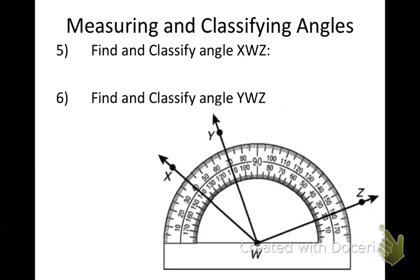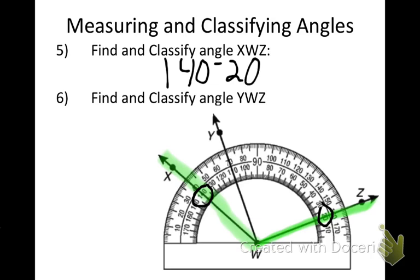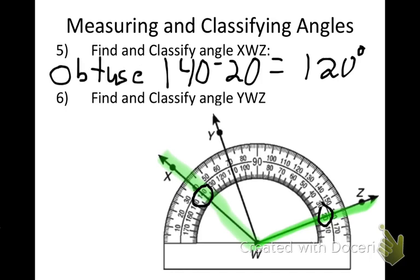Protractors are a way that you can find degree angles — find the measure of the angles. Number five: find and classify angle XWZ. What do you notice about this angle? Does this angle start at zero? No. So the best thing to do is to find the angles. This one goes to 140 and 20. We subtract them: 140 minus 20 gives us 120 degrees, which is an obtuse angle because it is larger than 90 and less than 180.